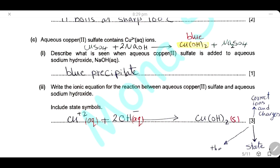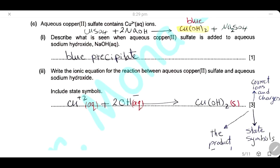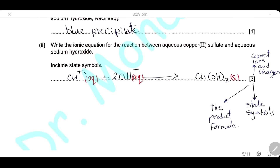Include the state symbols: aqueous for copper ions and hydroxide ions, and solid (s) for the copper hydroxide precipitate. This question is worth three marks: one for the correct ions and their charges, one for the state symbols, and one for the correct formula of the product, copper hydroxide.